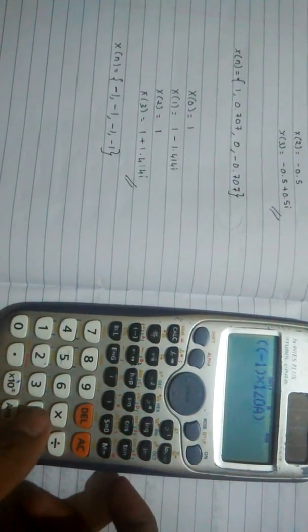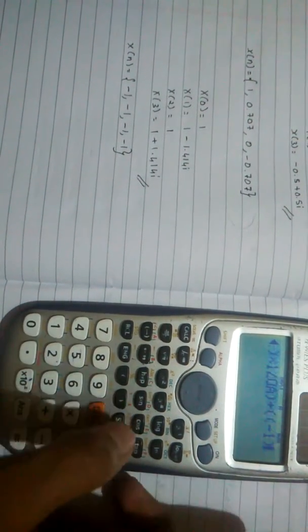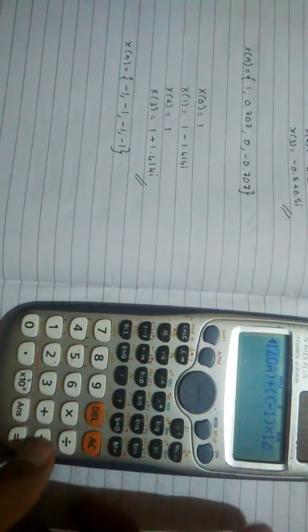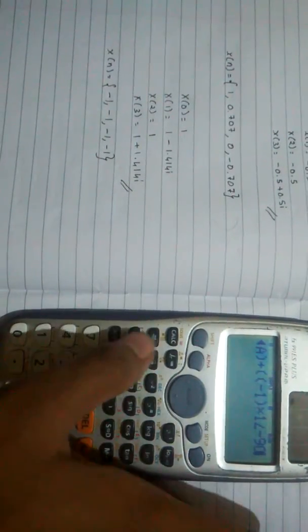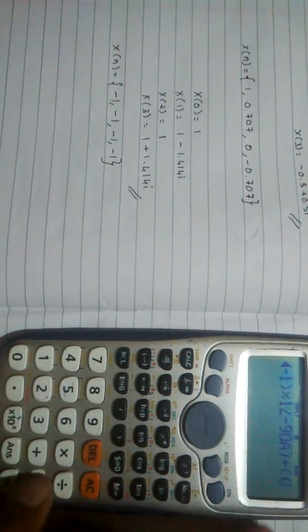Otherwise it would return a syntax error. And then plus open bracket and then open another bracket and then minus 1 close bracket into 1 shift angle minus 90 alpha a and then close bracket.